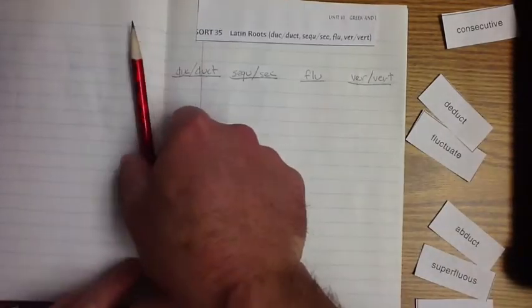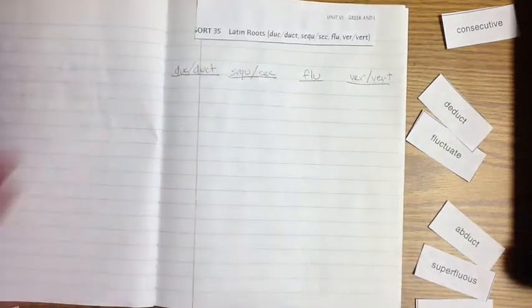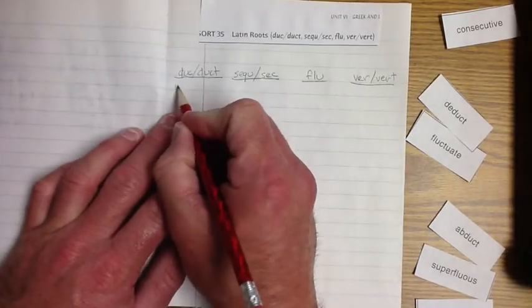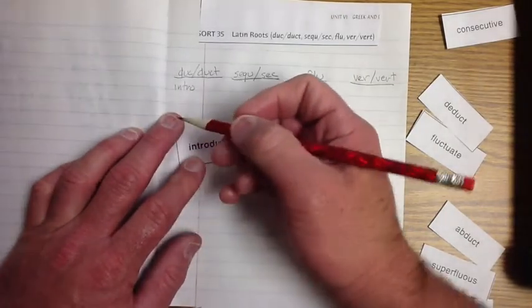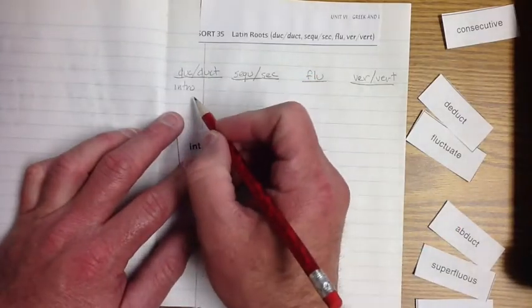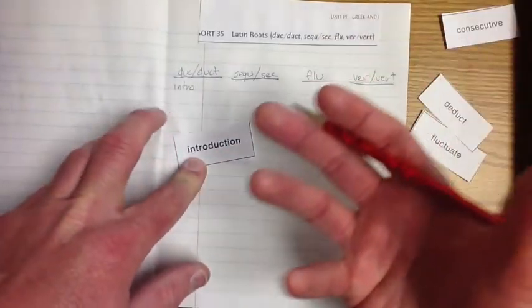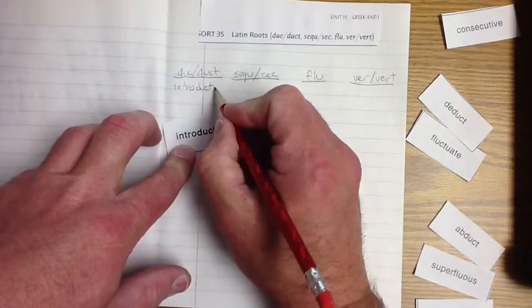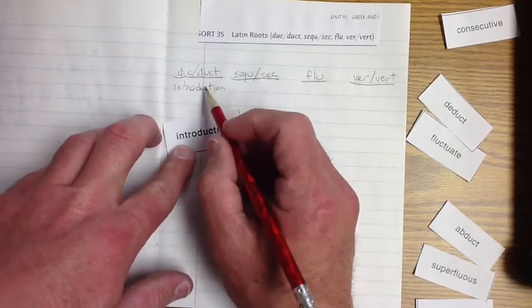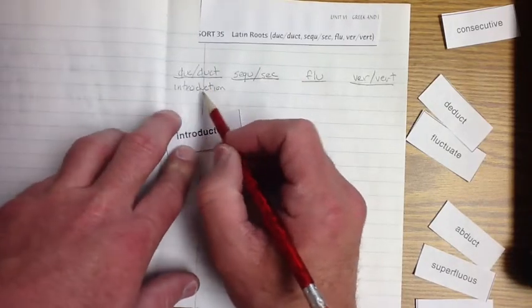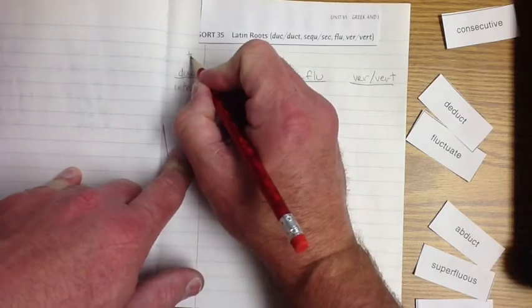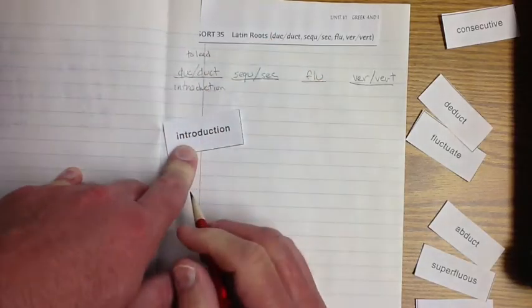So, our first word we're going to talk about today is D-U-C, D-U-C-T. So, let's talk about this word right here. Introduction. So, let's write it. Intro. Now, an intro, we know into. So, an intro leads into something. So, an intro-du-ct-shun. And shun is the act of. So, what does duct mean? Duct actually means to lead. To lead. Okay?